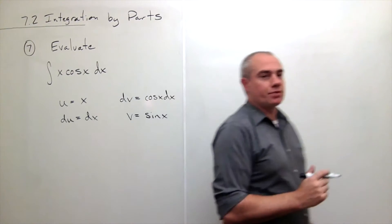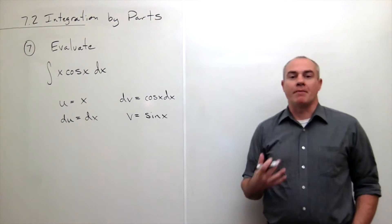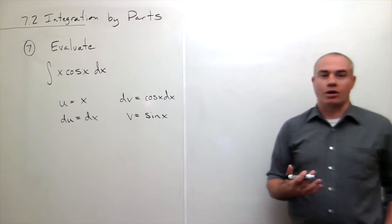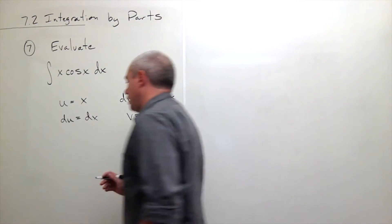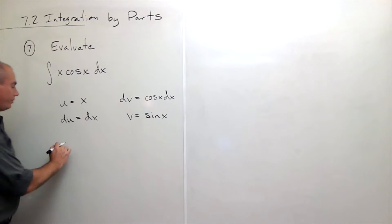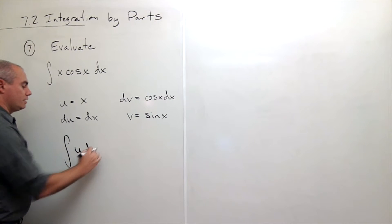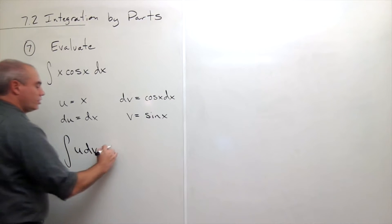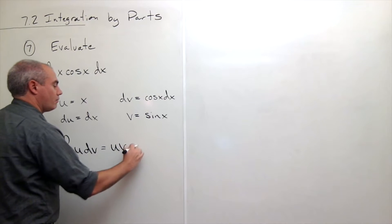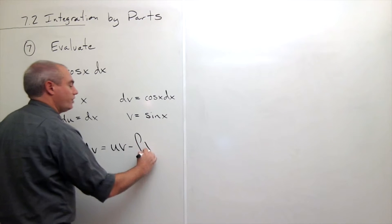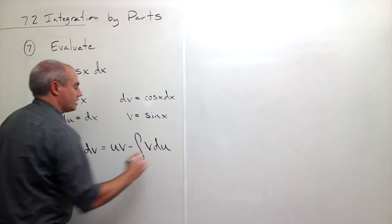Alright, now what we need to do is remember the formula for integration by parts. And the formula is the following: the integral of u dv is equal to u v minus integral v du.